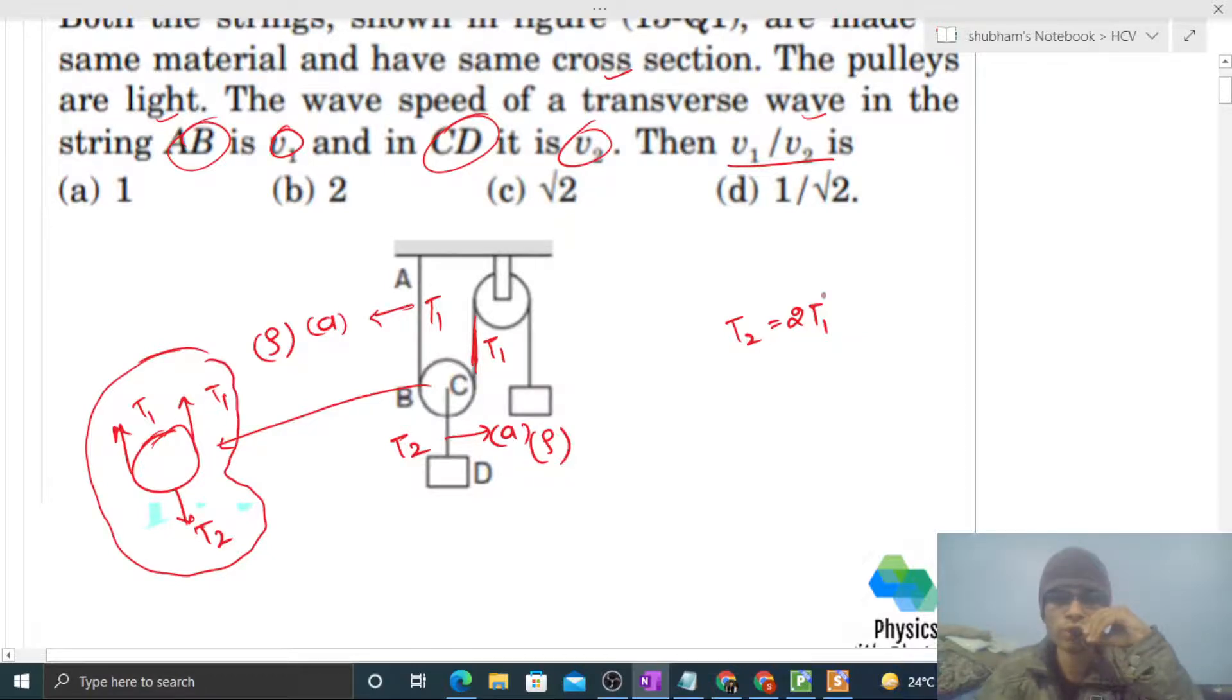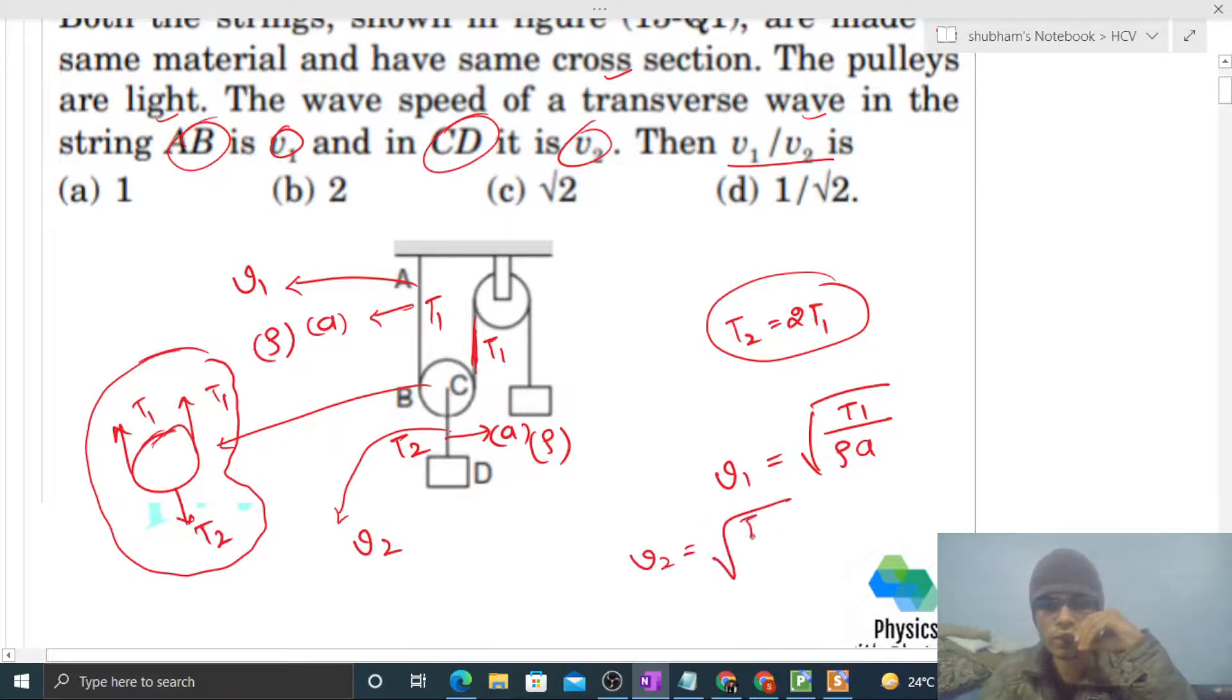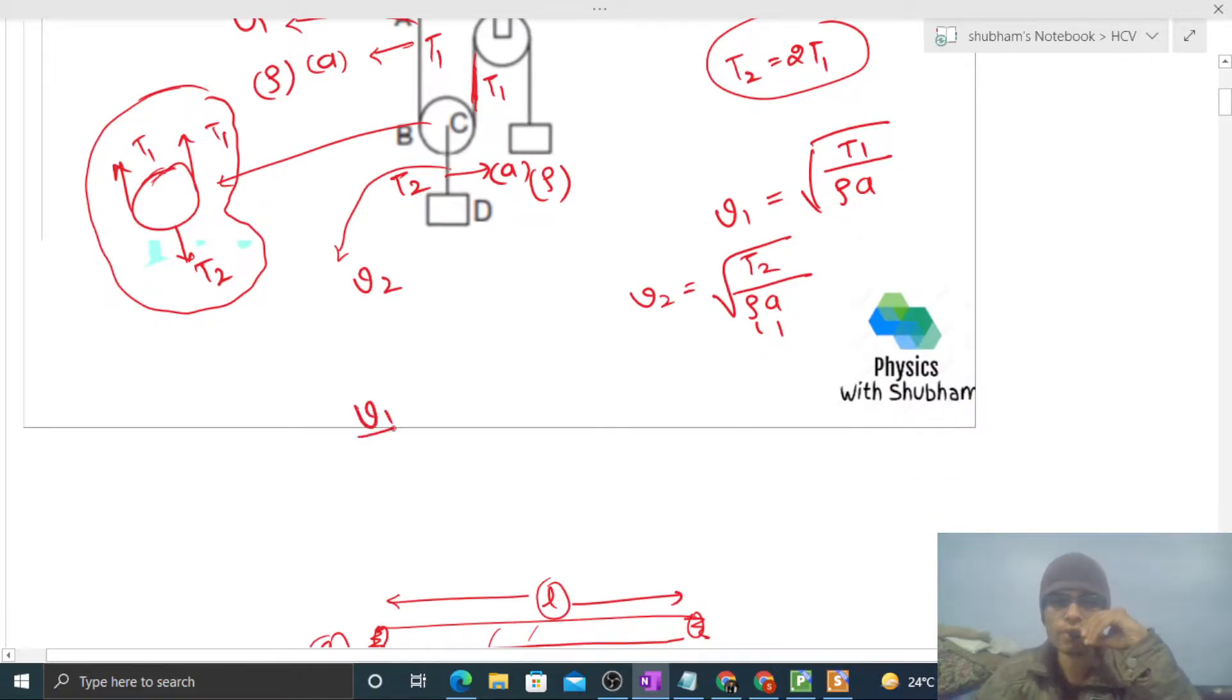The speed of transverse wave in AB is v1, and in CD the speed is v2. So v1 will be under root of T1 divided by density into cross-sectional area. Similarly, v2 is equal to under root of T2 divided by density and cross-sectional area. Density and cross-sectional area are the same for both, so just take the ratio v1 by v2.